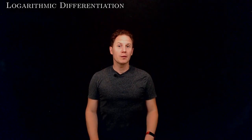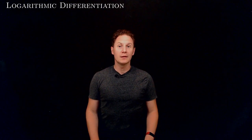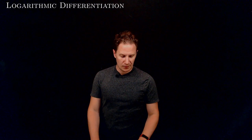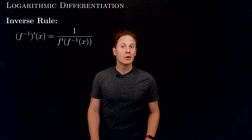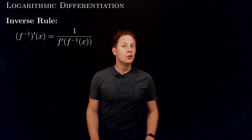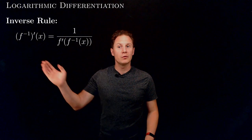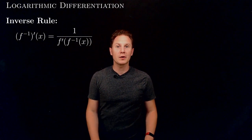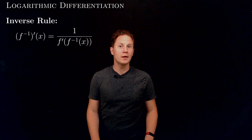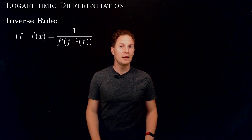It might sound surprising, but sometimes it's easier to compute the derivative of the logarithm of a function than the derivative of the function itself. This is called logarithmic differentiation, and it is based on the inverse rule that we established last time, which tells us that the derivative of the inverse of a function is 1 divided by the derivative of the function evaluated at the inverse.